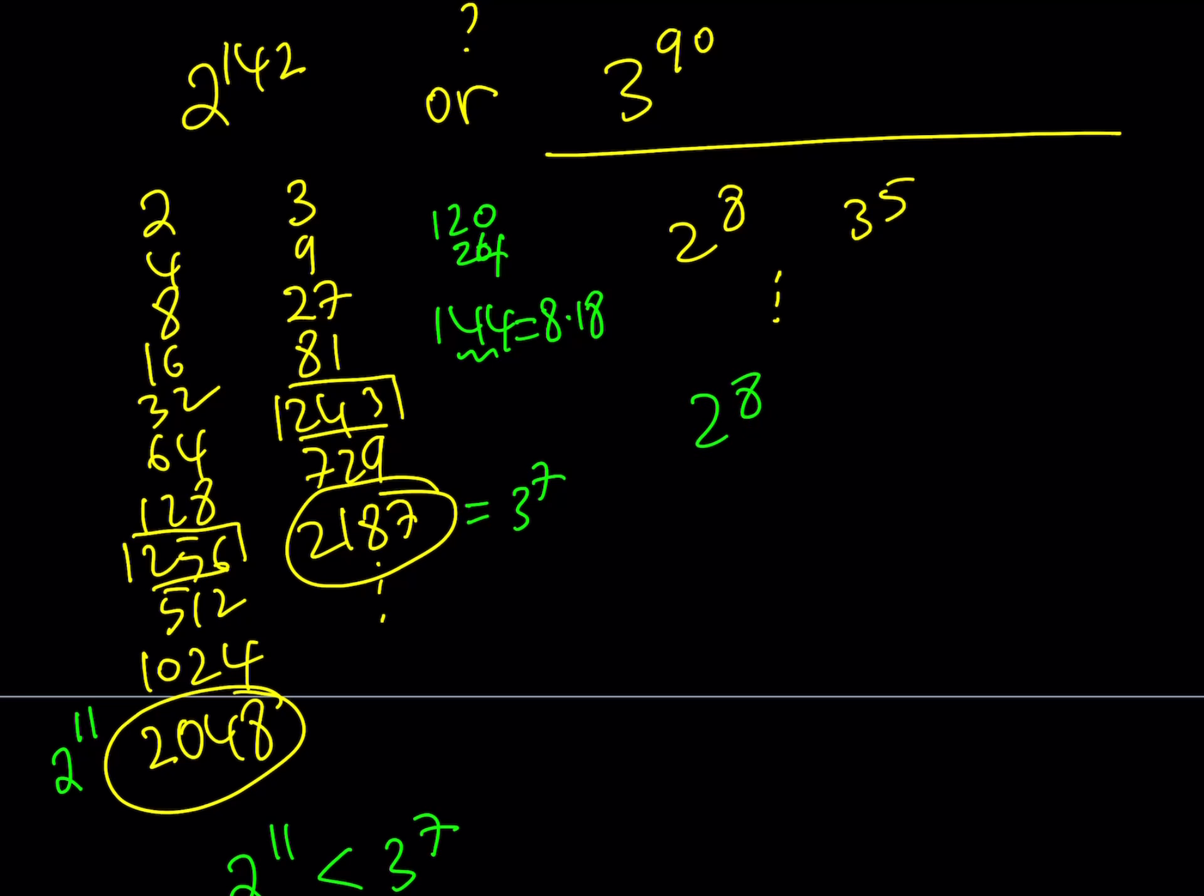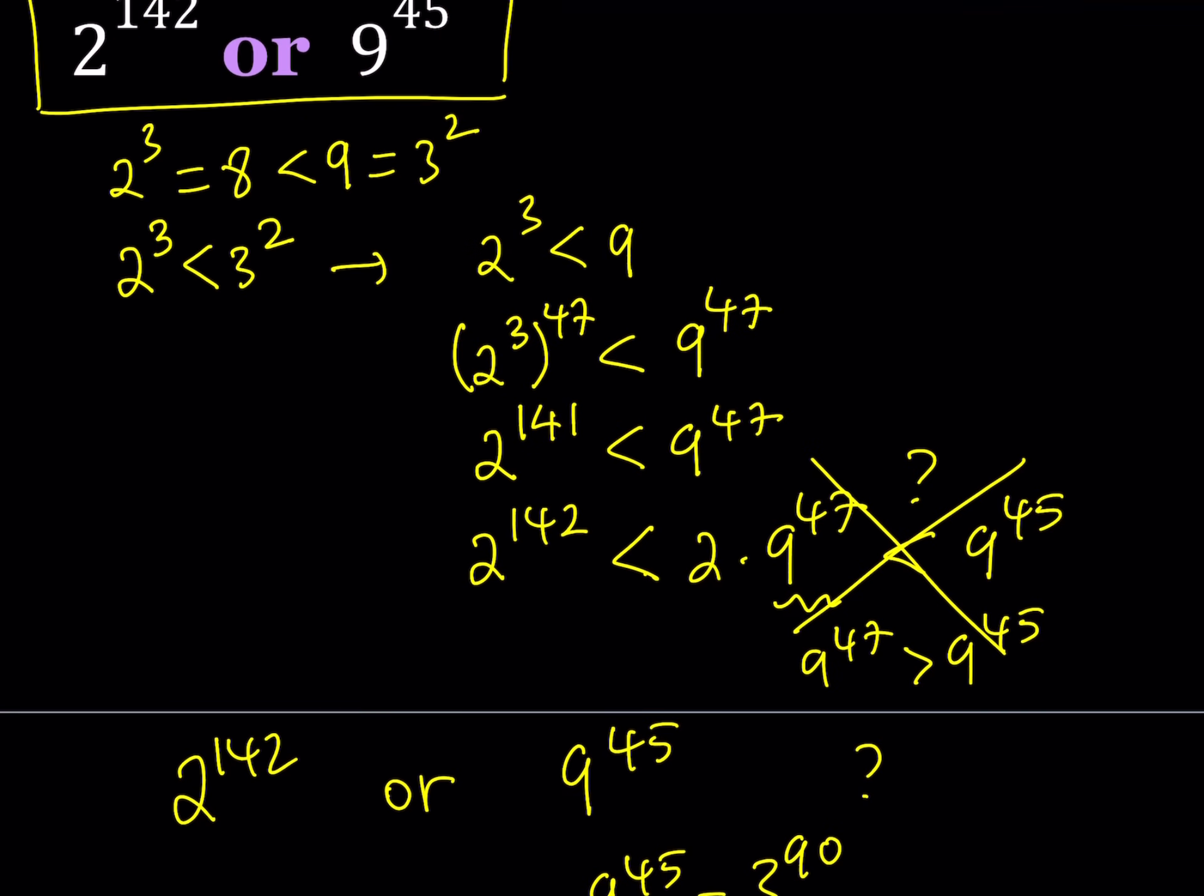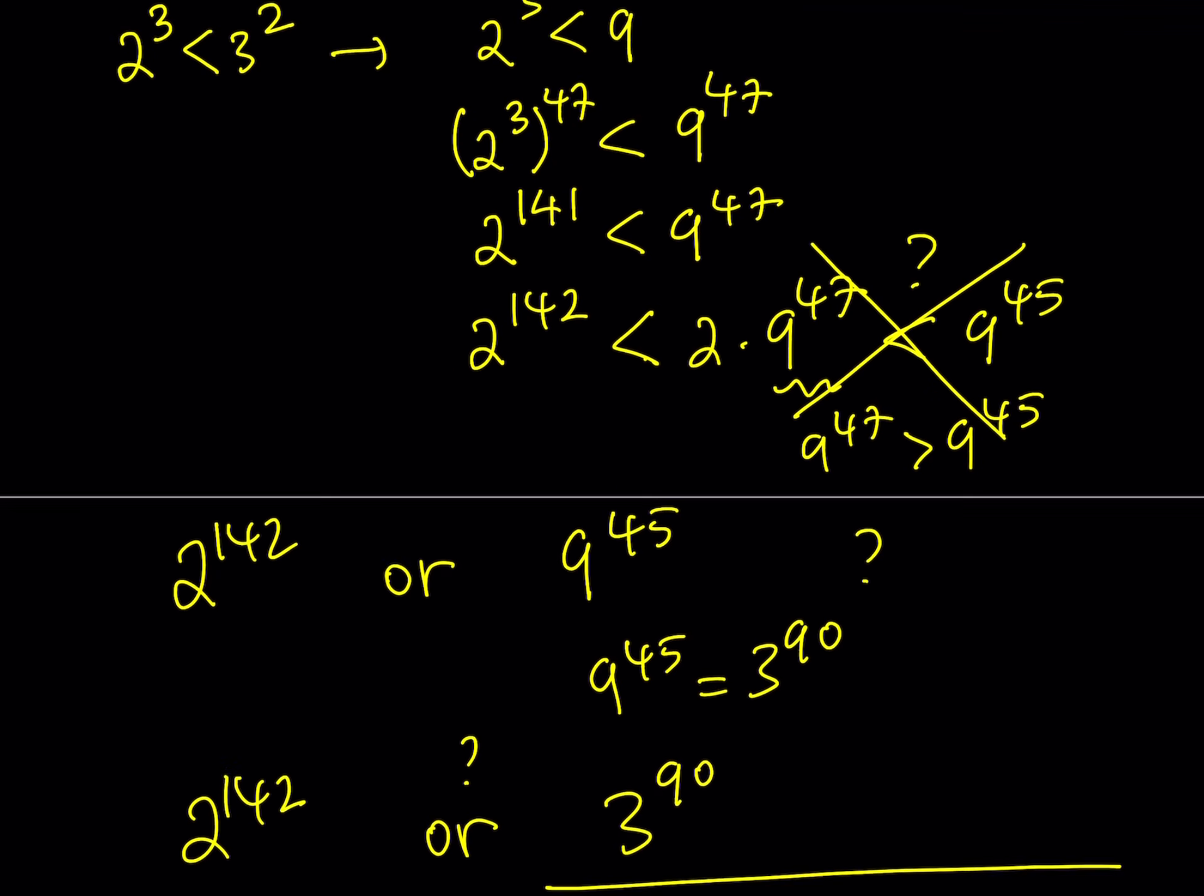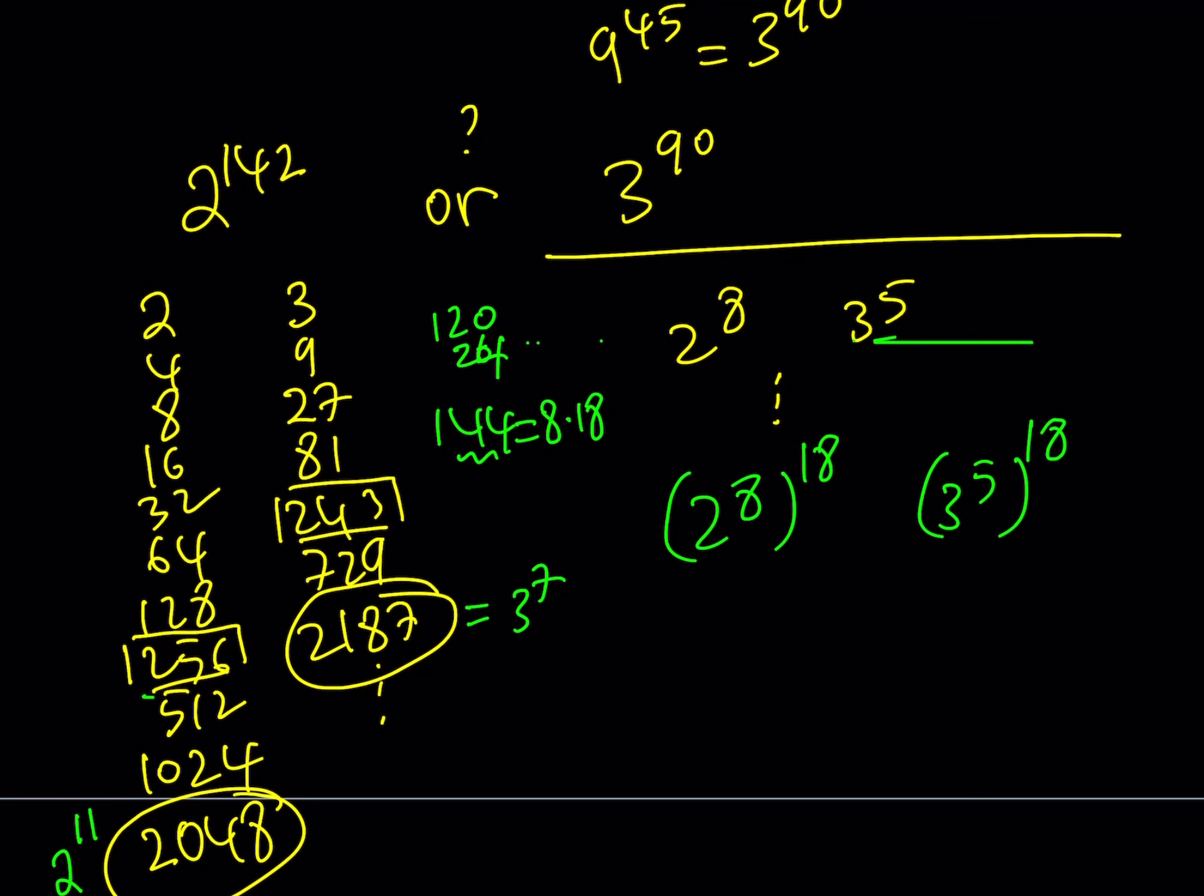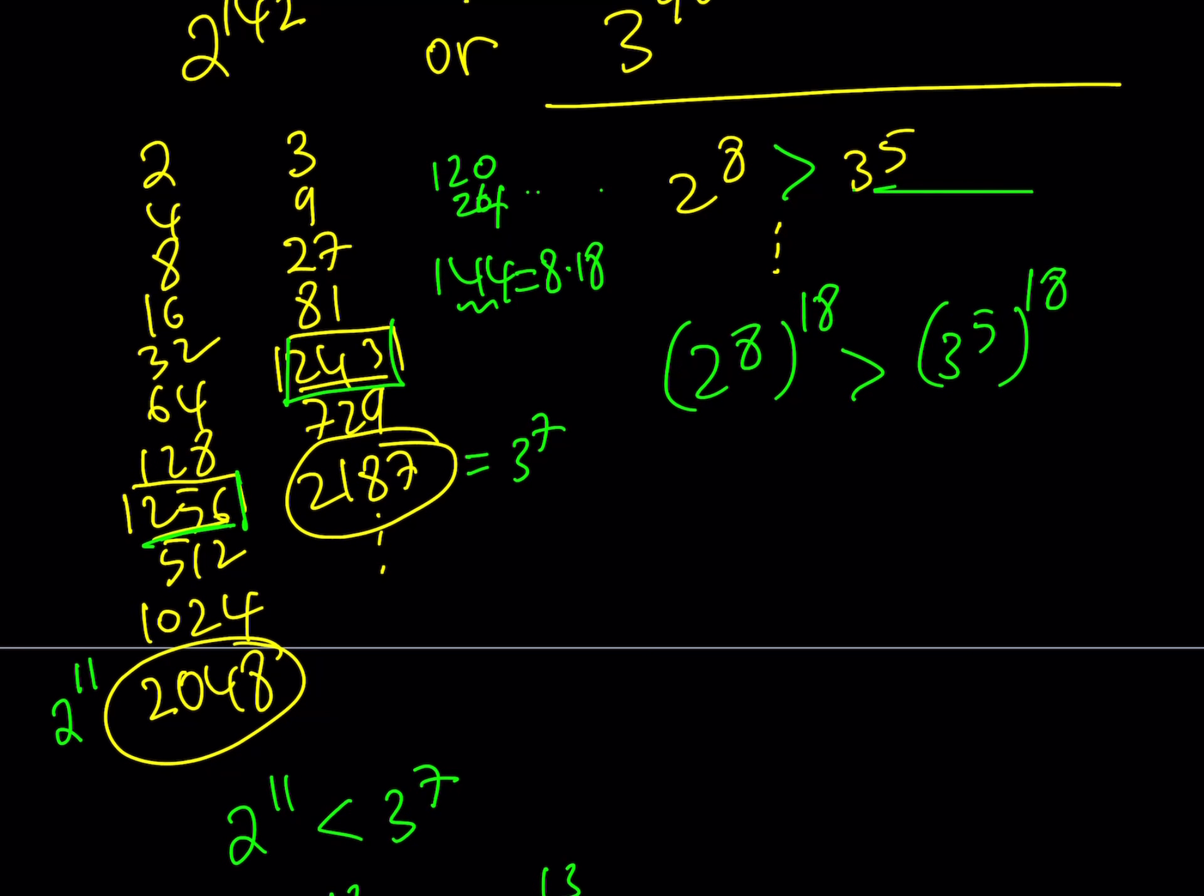If I do, we know that 2 to the 8th power is 256 and it is greater than 3 to 5. So this is greater than that. This gives us 2 to the power of 144 is greater than 3 to the power of 90.